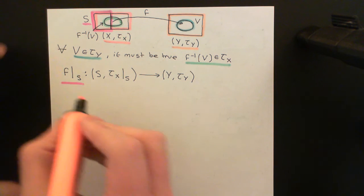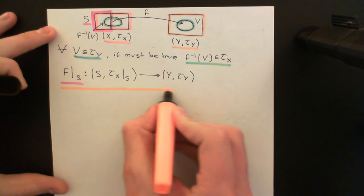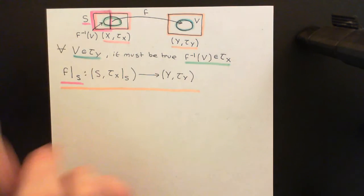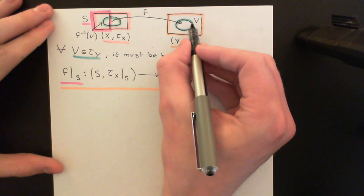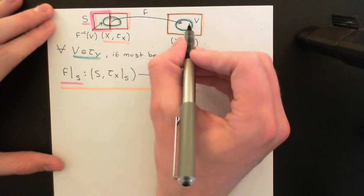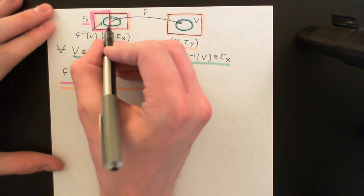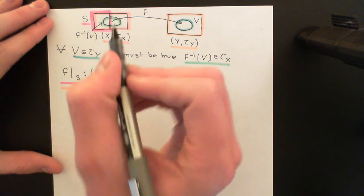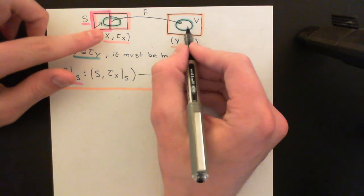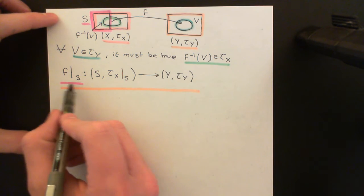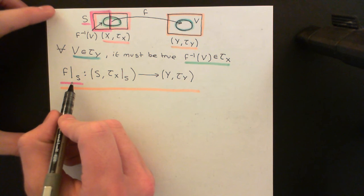That's a reasonably intuitive theorem to be true, but it does require proof, so let's give the proof — and it's a very simple proof. What do we need to be true? We need it to be true that if we take any open set in our codomain topological space, the pre-image of that in the domain topological space, which is in purple now, has to be an open set there. So what is going to be the pre-image of any open set from our codomain topological space under this mapping F restricted down to S?